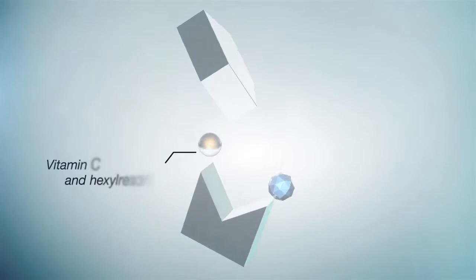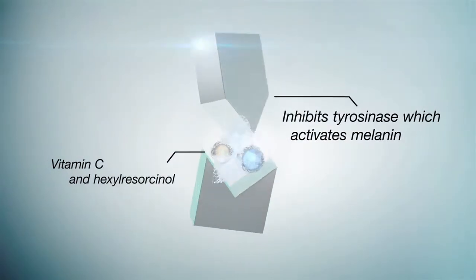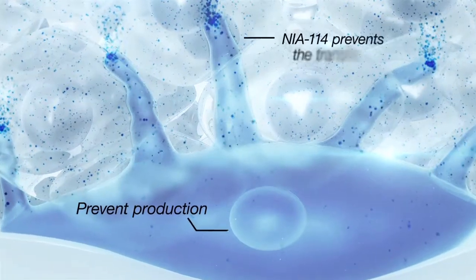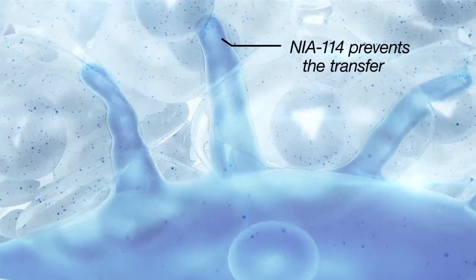Vitamin C ester and hexylresorcinol inhibit tyrosinase, which activates melanin. Powerful botanicals prevent the future production of melanin. Patented NIA114 prevents the transfer.